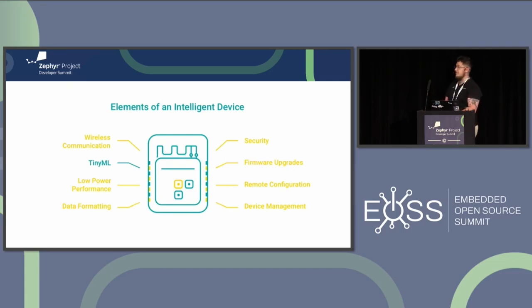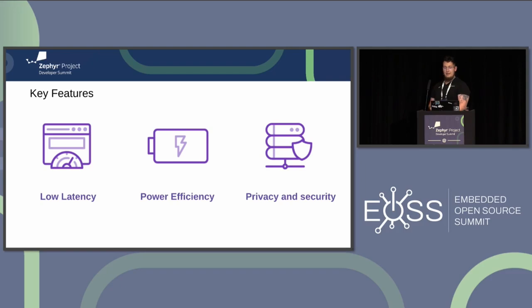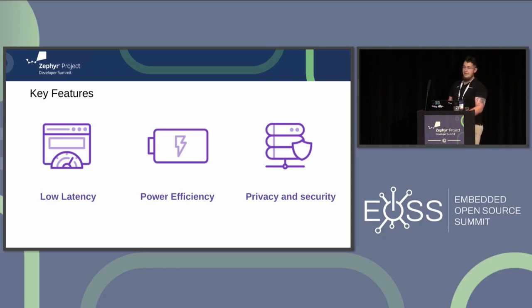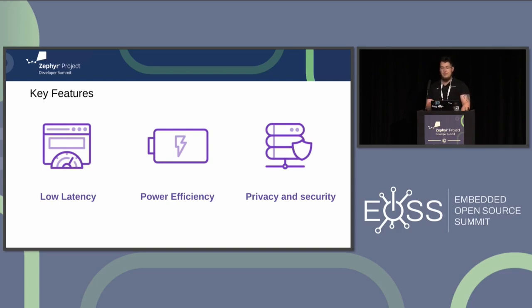Smart sensors simplify the implementation of TinyML as they allow for retrofitting existing devices with TinyML capabilities without having to redesign the whole solution. The key features of TinyML: low latency — by running machine learning models on the edge, TinyML reduces the need for data transmissions to the cloud and real-time inference results in low-latency decision making. Power efficiency — these algorithms are designed to be highly efficient, requiring minimal power consumption, enabling deployment on battery-powered devices and extending their operational lifetime. Privacy and security — with TinyML the data remains on the device, reducing the need for transmitting sensitive information to external servers, enhancing privacy, mitigating potential security risks and allowing for localized processing.